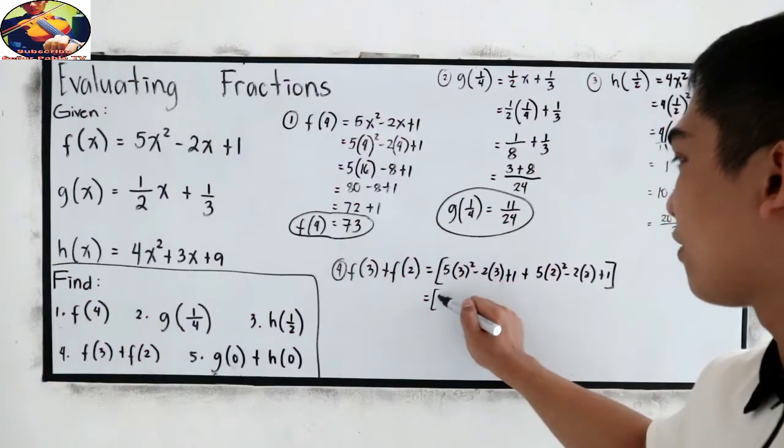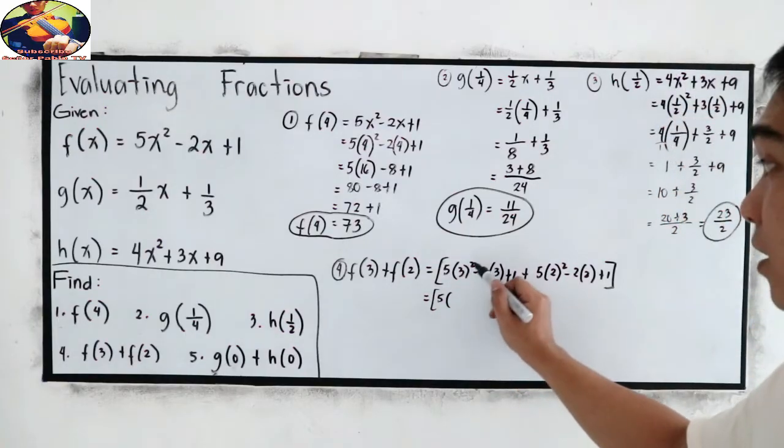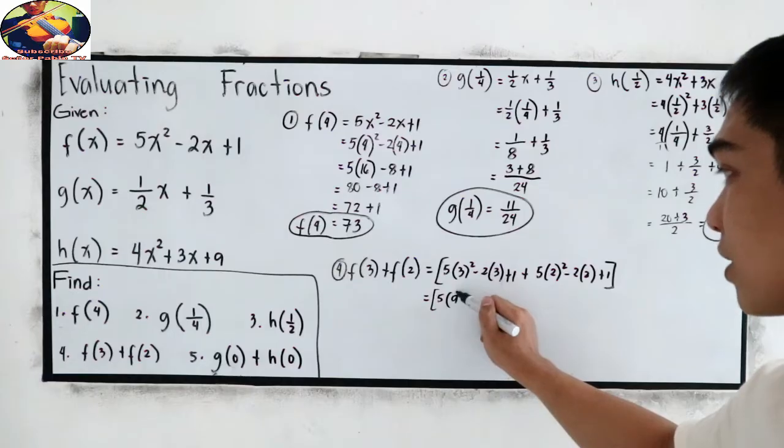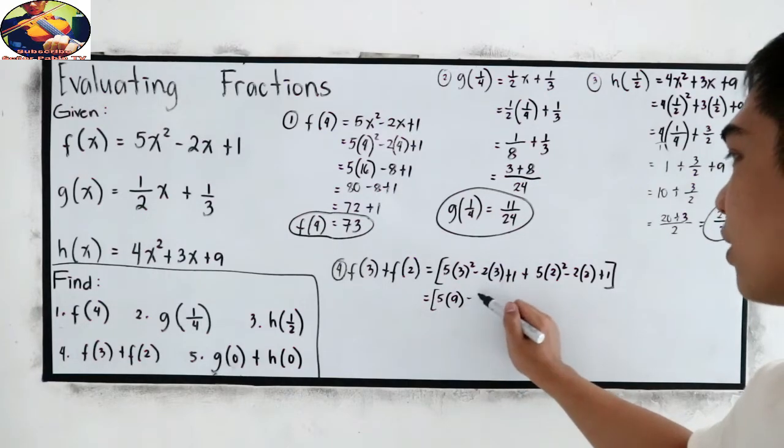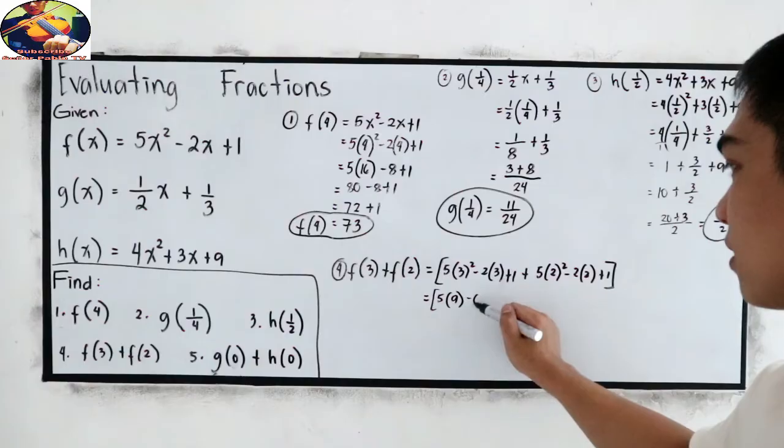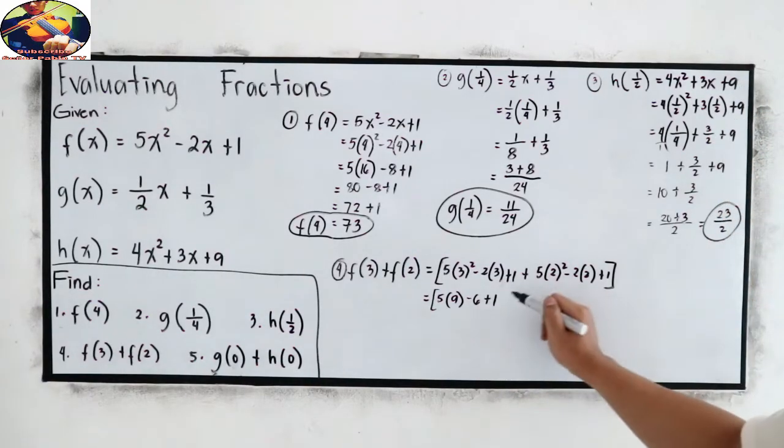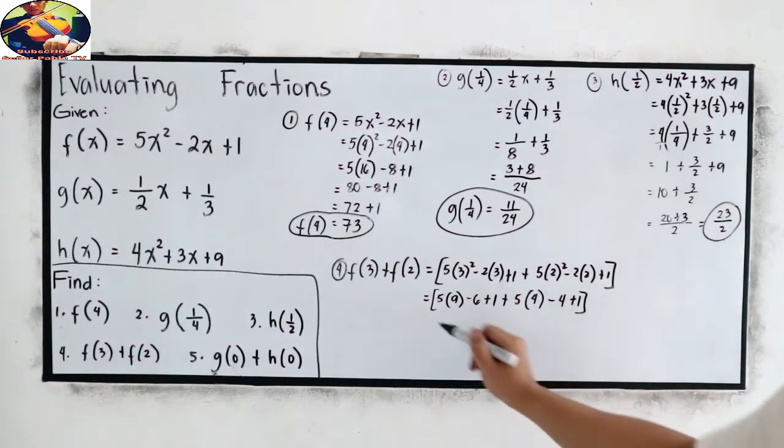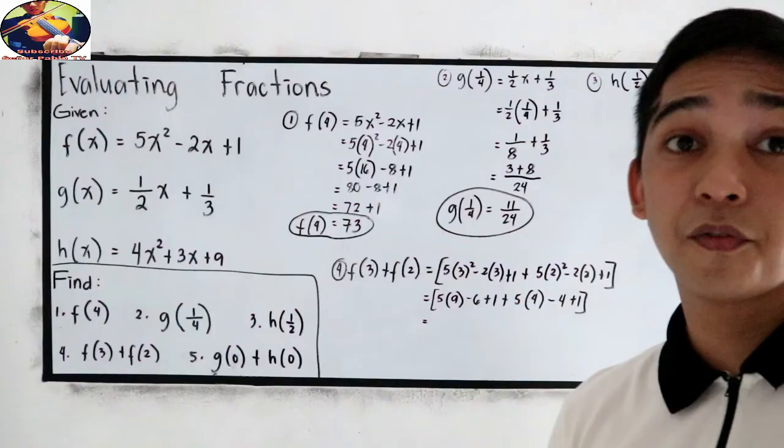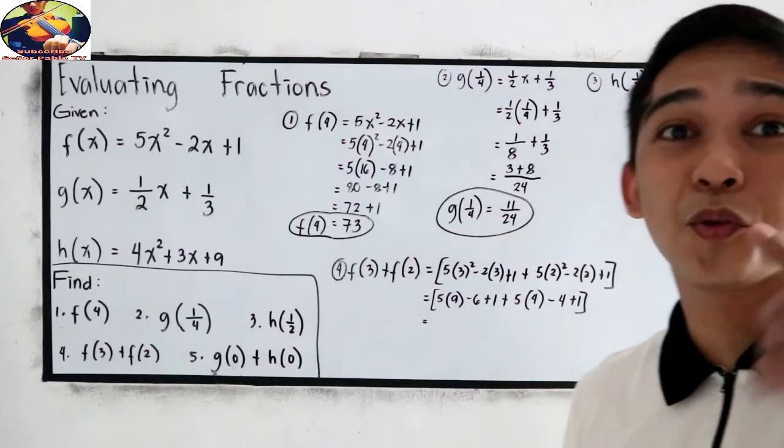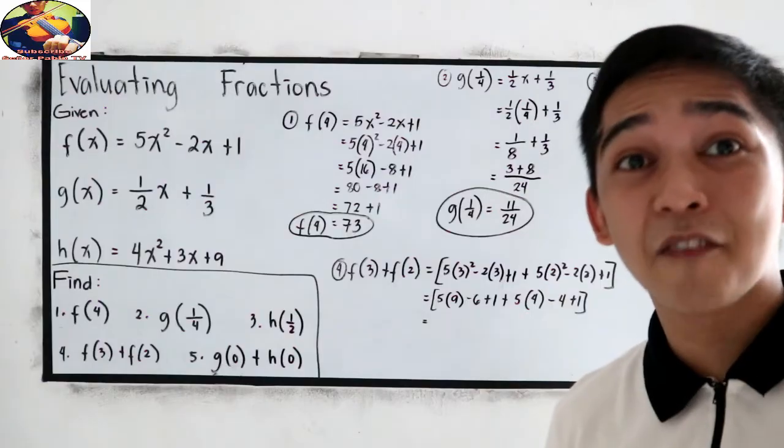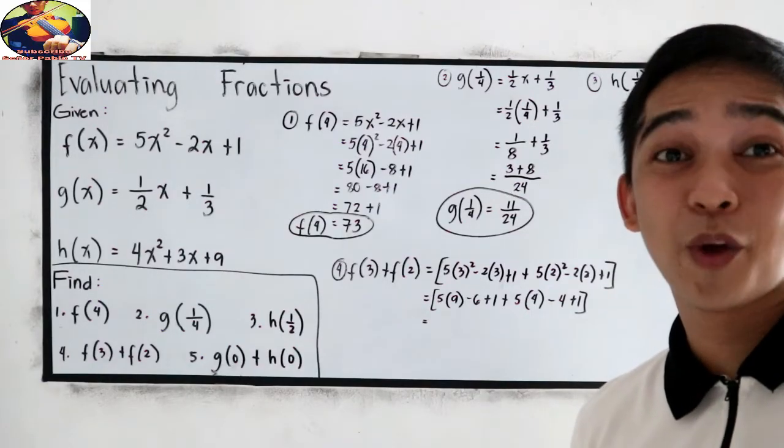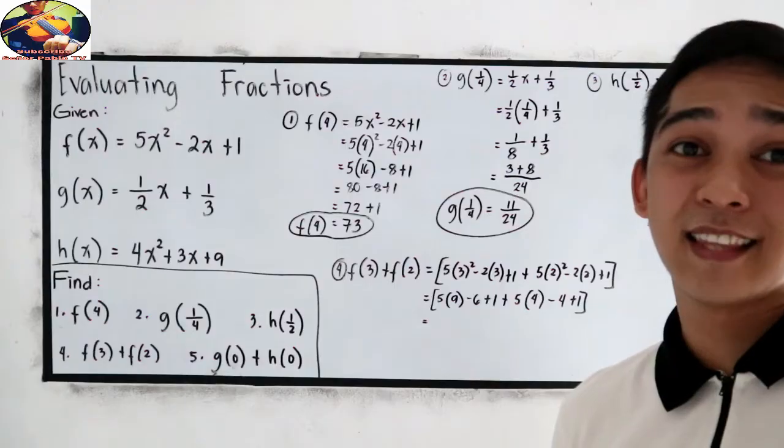So, we have 5 times 3 squared, that is 3 times 3, which is 9, minus 2 times 3, which is 6, plus 1. Plus 5 times 2 squared, which is 4, minus 2 times 2, which is 4 plus 1. Make sure that you follow our PEMDAS rule. If you want to watch our PEMDAS, please proceed in our grade 7 playlist. We have a topic for PEMDAS in that playlist.